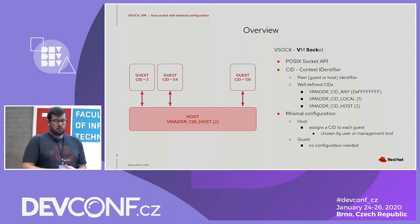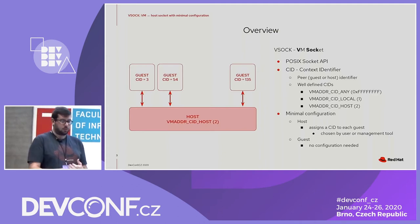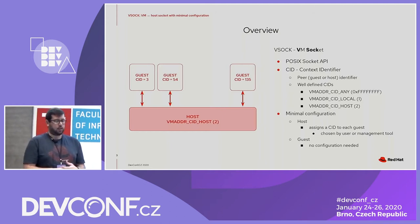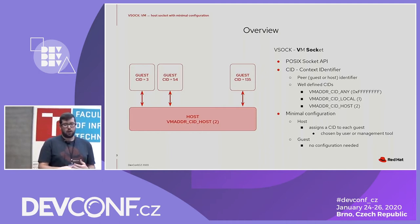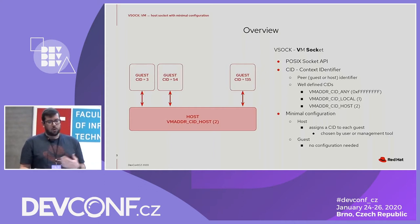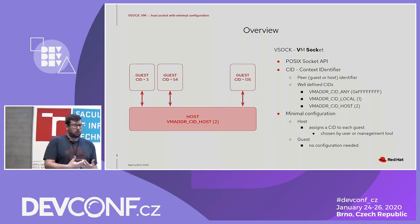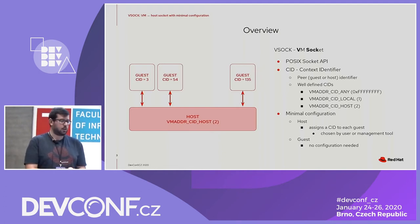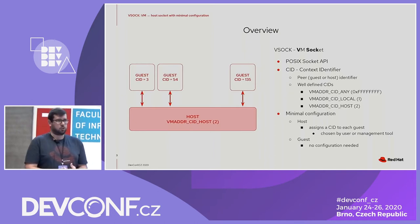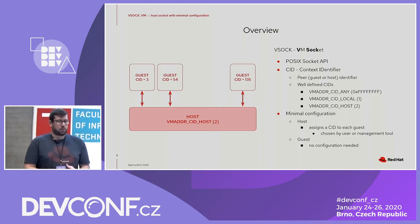CID_LOCAL is a new one used for local communication. CID_HOST has value two and is very useful in the guest to reach the host in any condition. Compared to a network card interface where we need to set up IP addresses for both host and guest, with VSOCK the only thing to configure is the CID to assign to a VM. This can be configured by the user or automatically by the management tool. In the guest, no configuration is needed, and the host can always be reached using CID_HOST.